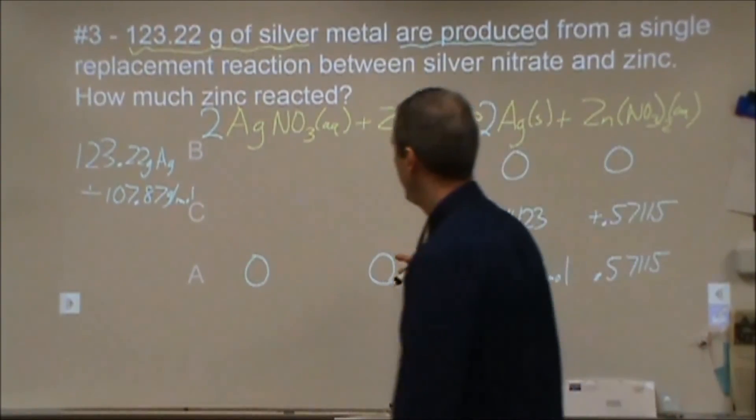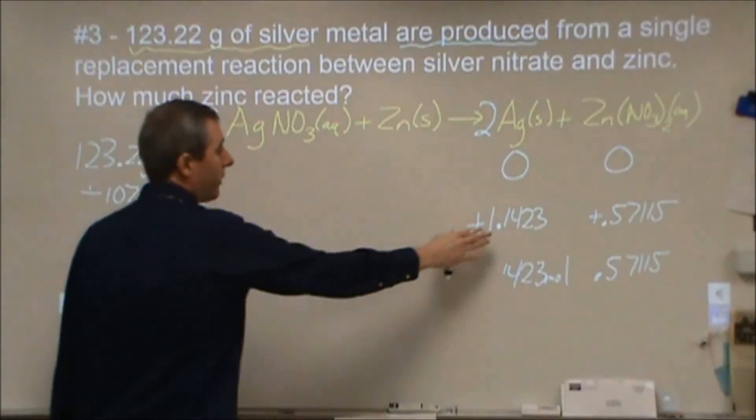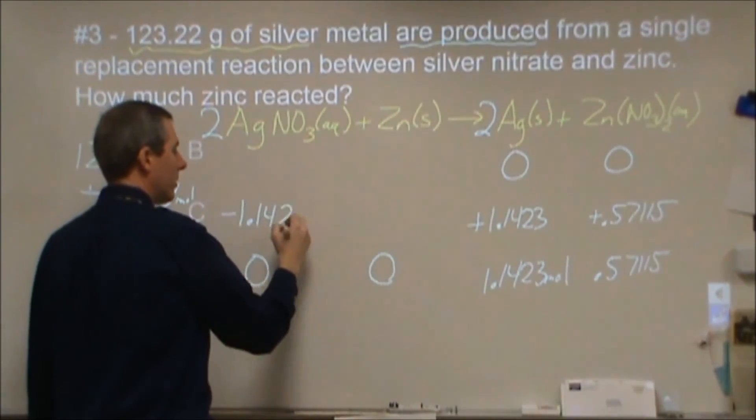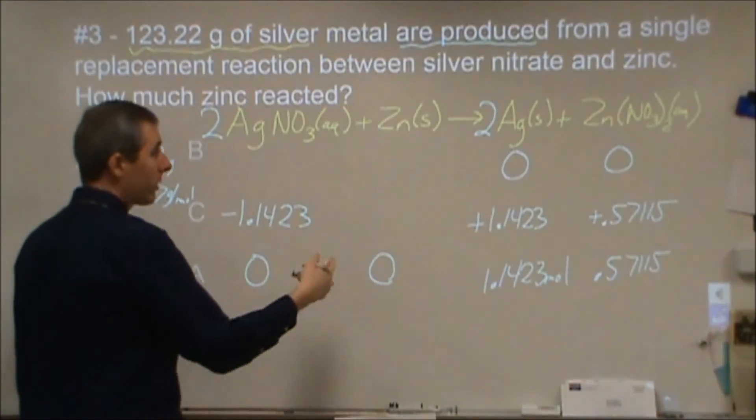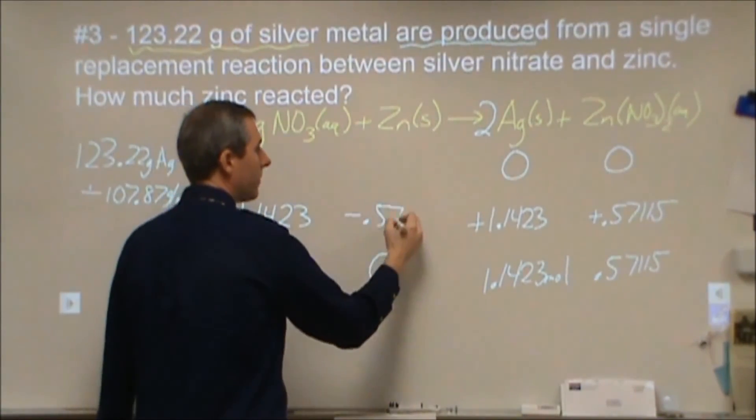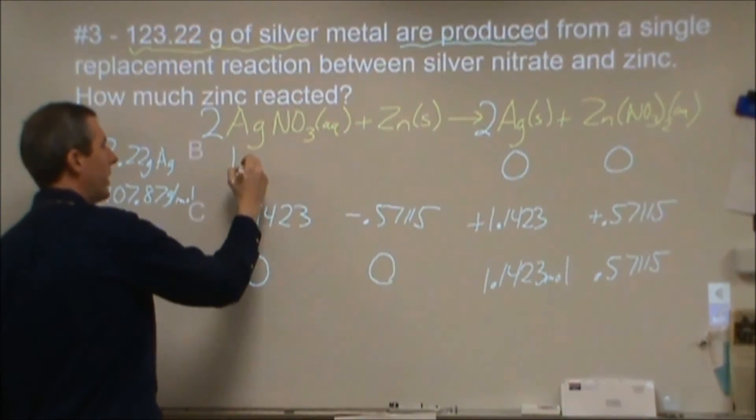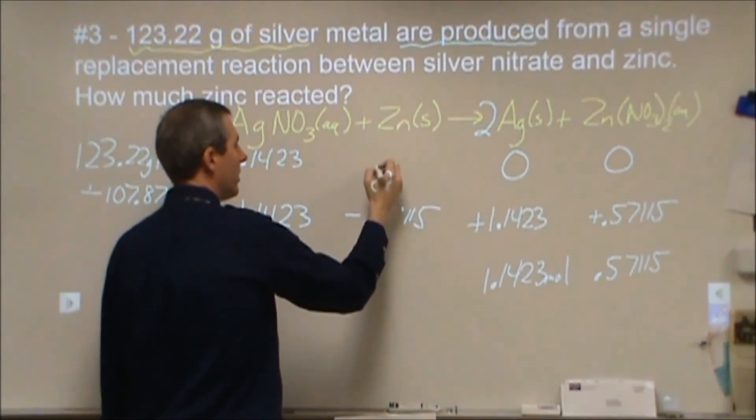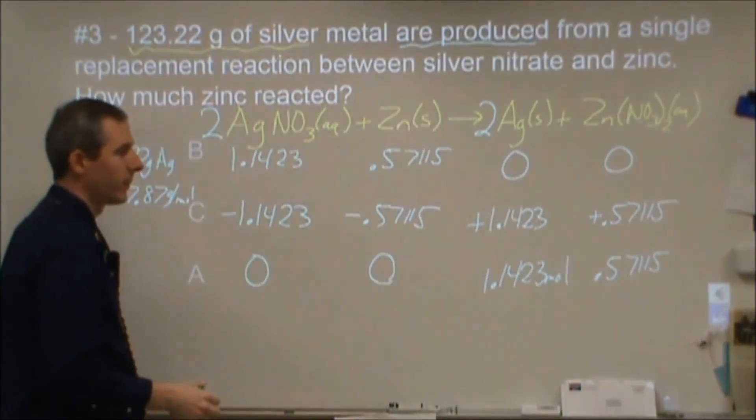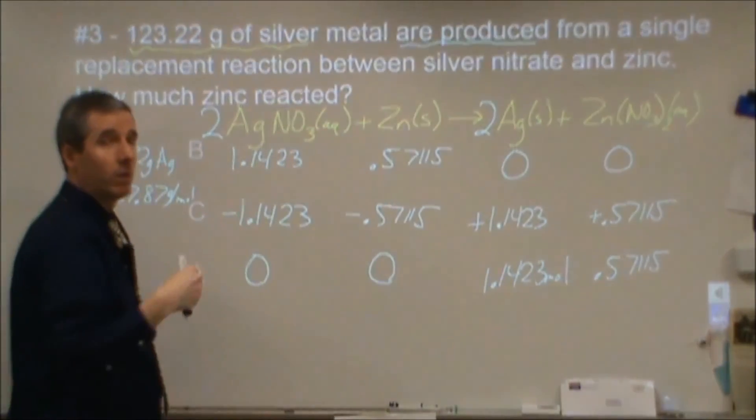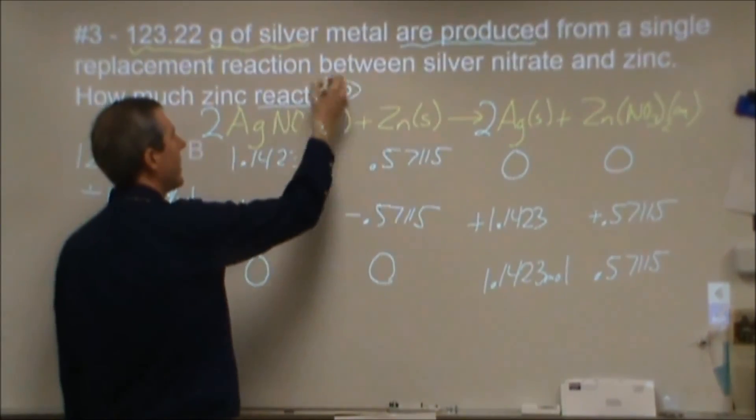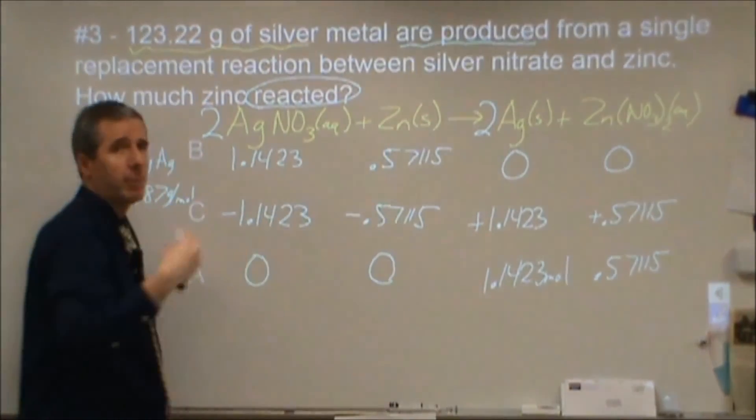If we take that back over to here and look at how much of these must have reacted. For the silver and the silver nitrate, it's a 2 to 2 ratio. The changes should be the same, just in the opposite direction. This one's getting consumed. For the zinc, there's two ways to think about this. We could either cut this in half, or we could do the fact that the zinc nitrate and zinc do the same thing, just one's getting consumed. So to start, we must have started with 1.1423 moles of this and 0.57115 moles of zinc. In theory, either one of these could have had more and then we would have had an excess left over there. But we know that's how much actually reacted. The question said how much zinc reacted, it didn't say how much zinc did you start with. So we could have started with more zinc than that, but this is how much actually took place in the reaction. So our answer here is this 0.57115.